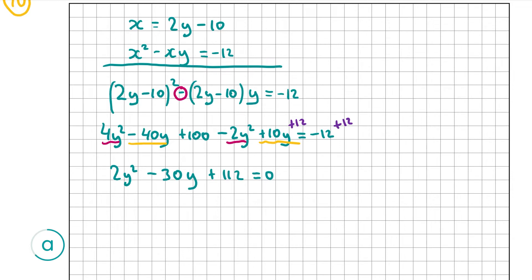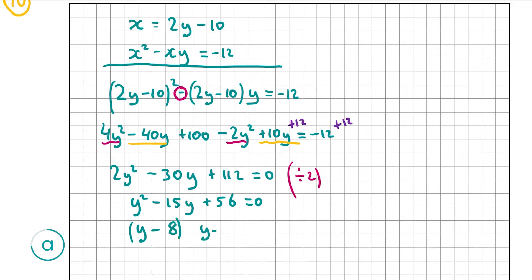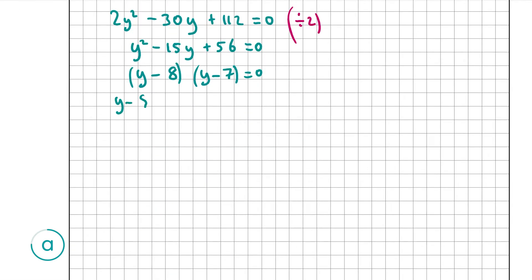To solve this we can use the minus b formula or the guide number method. First I'll divide through by 2, which gives y² − 15y + 56 = 0. Factorizing gives (y − 8)(y − 7) = 0, so y − 8 = 0 and y − 7 = 0, which gives y = 8 and y = 7.